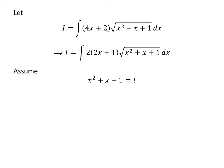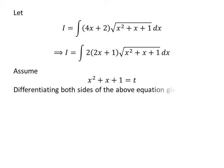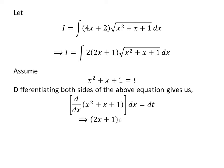We will solve the integration by application of the substitution method. Let us assume x squared plus x plus 1 is equal to t. Taking the differential of both sides gives us the derivative of x squared plus x plus 1 with respect to x times dx equals dt. We know the derivative of x squared plus x plus 1 is 2x plus 1, so 2x plus 1 times dx is equal to dt.